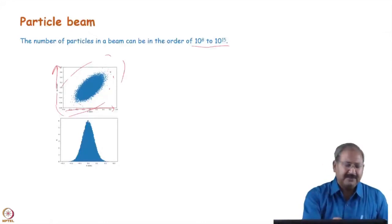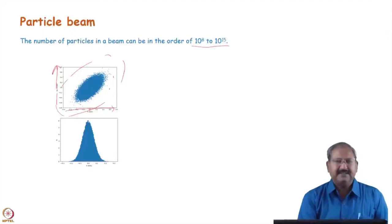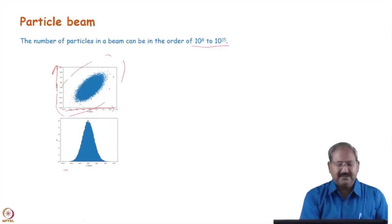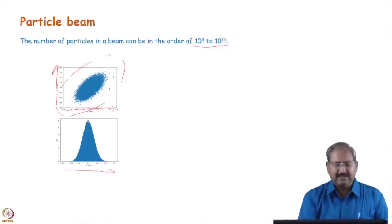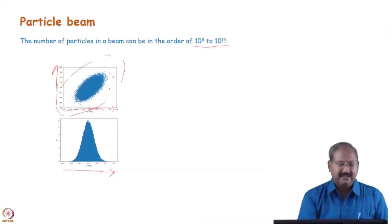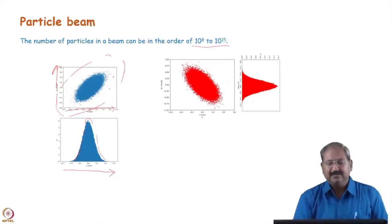Each dot in this plot represents a particle and its coordinates. There is a distribution of particles in position and angle. If we plot the distribution in position only, we can get a certain number-density distribution in the beam, and the same kind of distribution also exists in the vertical direction.